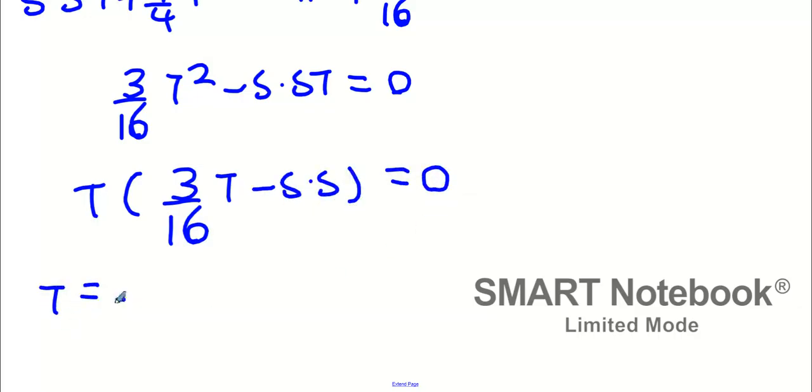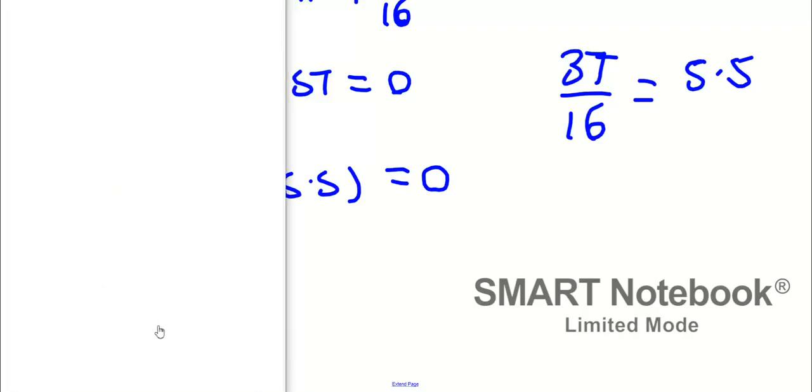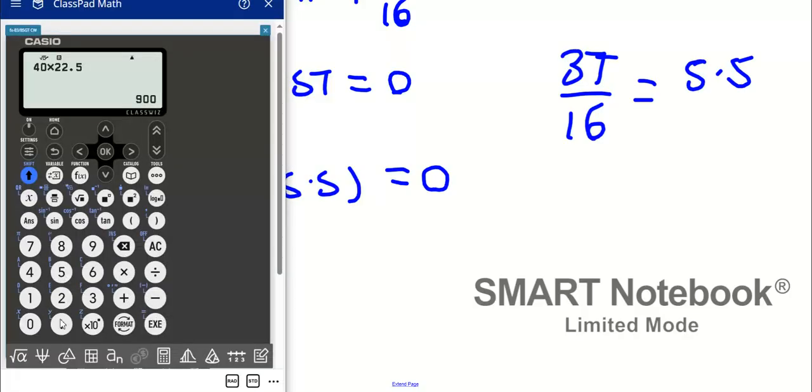When the answer is T equals zero, we're going to get three T over 16 equals 5.5. Multiply by 16 and divide by 3. We get 88 over 3 for the time.